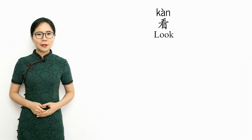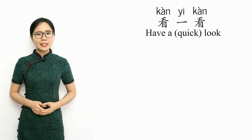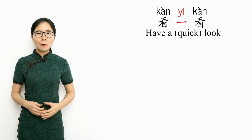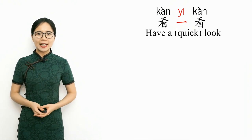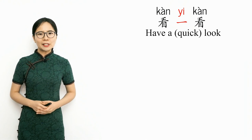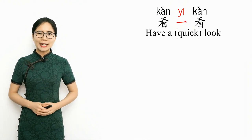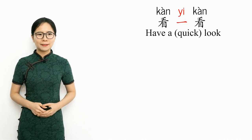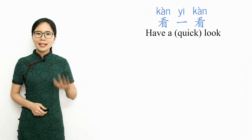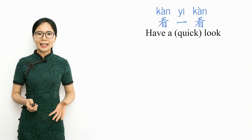There is one other common situation where Yi changes tones. If you duplicate a verb and put Yi between them, it indicates that the action of the verb is done briefly, and can also suggest that someone give something a try. For example, the verb kan means to look. Kan yi kan means 'have a quick look.' When using Yi between a duplicated verb, the whole phrase is said fairly quickly, and to make it easier to say, Yi changes to the neutral tone. This is similar to the tone change rule for Bu when used to ask yes-no questions. Please repeat after me: kan yi kan — have a quick look.